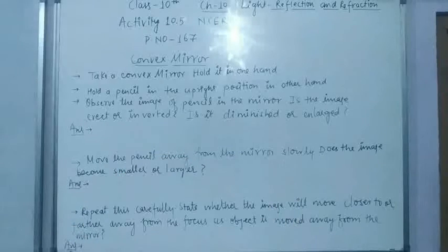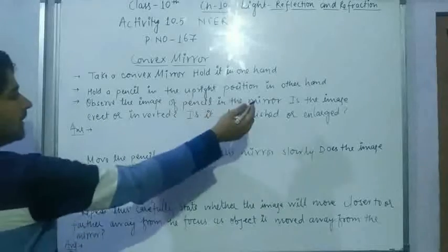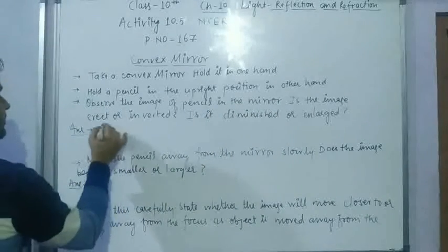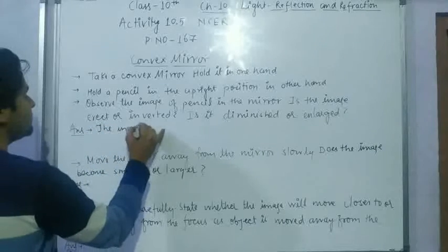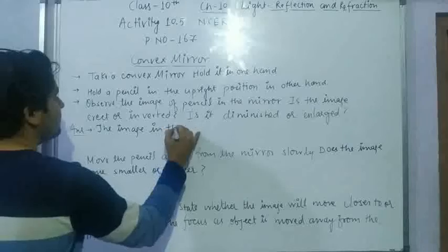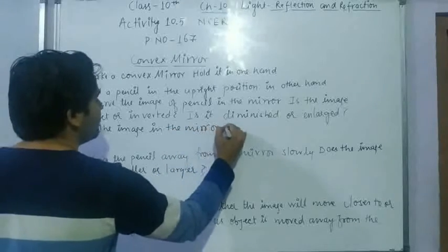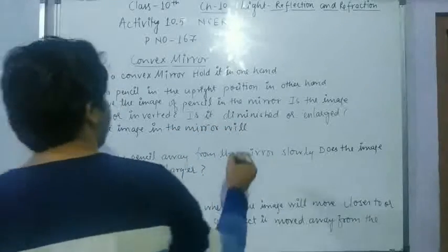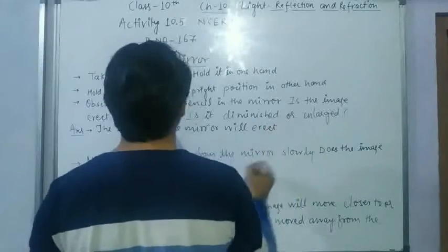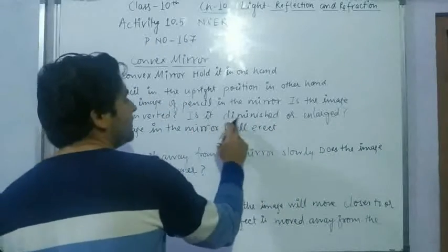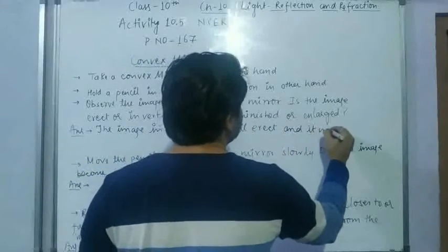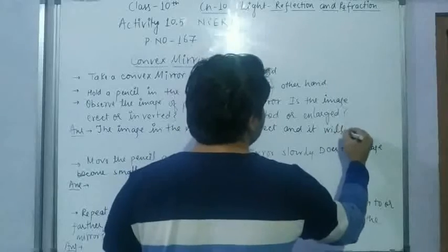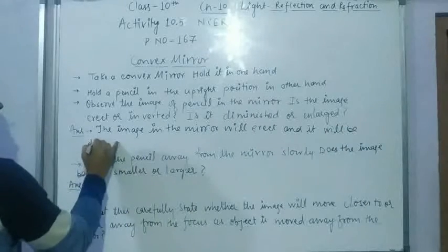I have observed the image of this pencil. Is the image erect or inverted? Is it diminished or enlarged? Diminished means smaller in size; enlarged means larger in size. The image is erect and it is diminished — it is smaller in size.